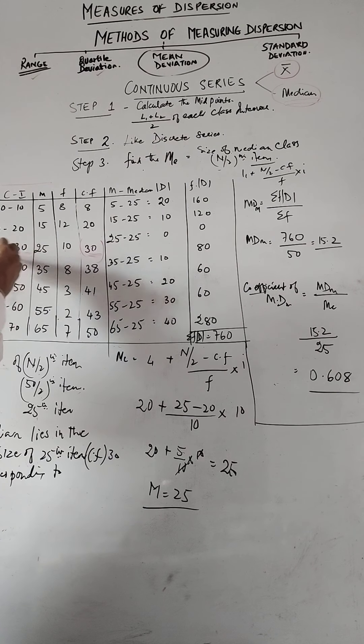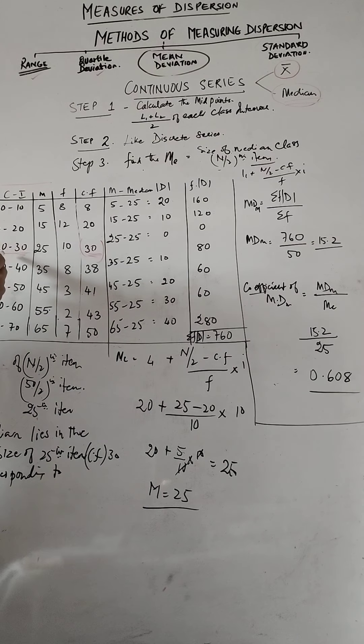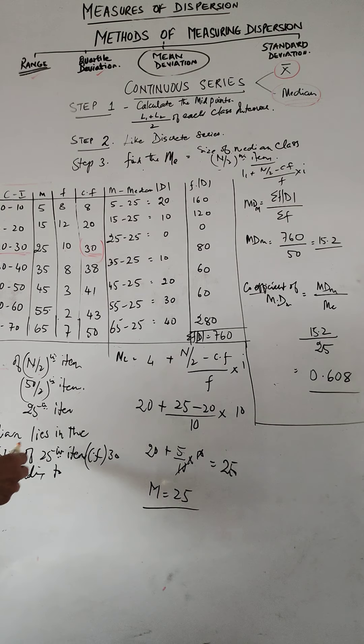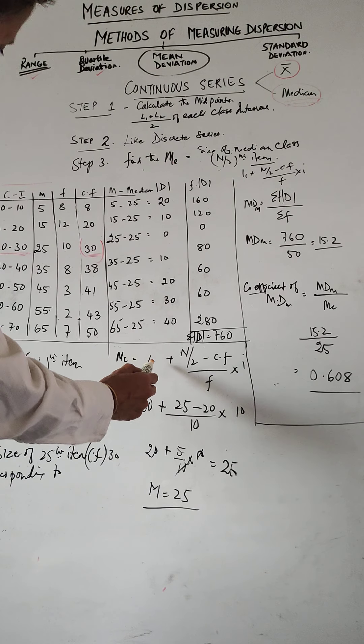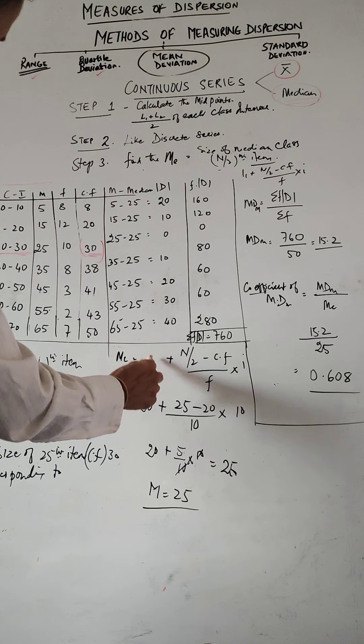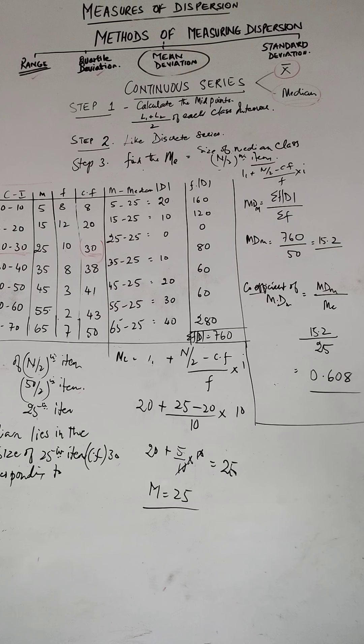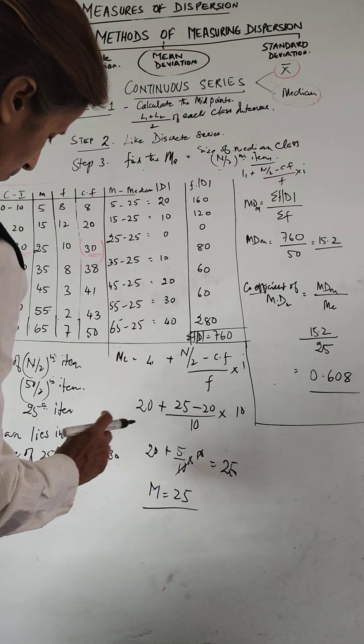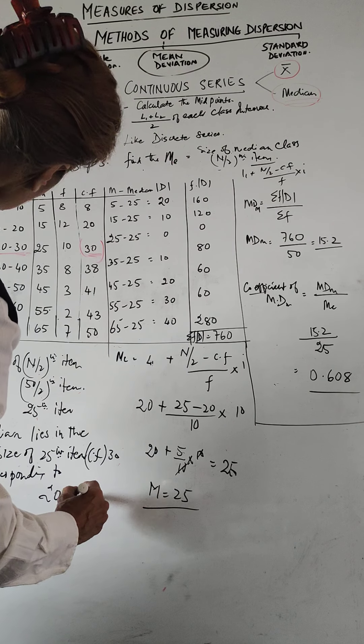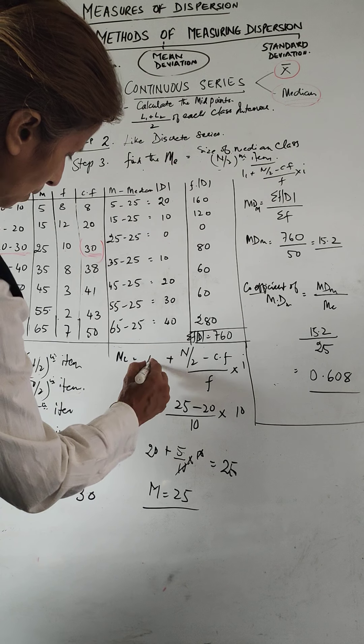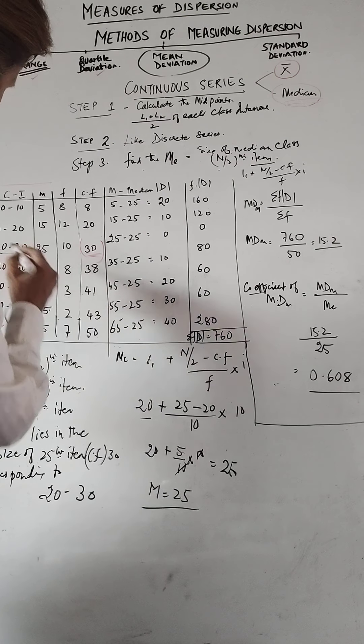Corresponding to that what do you get? The class interval median lies in the class interval between 20 to 30. So median lies in, first we found out that. Now what is here? So this is you take up L1, that means lower limit of the class interval. So it is between 20 to 30, right? So where is L1 now? L1 is 20.